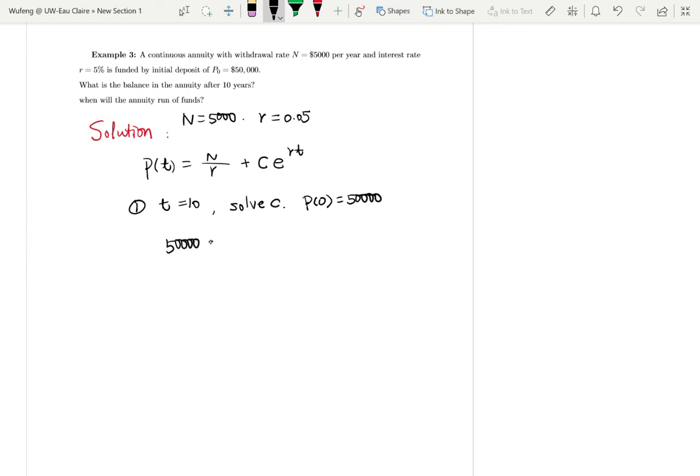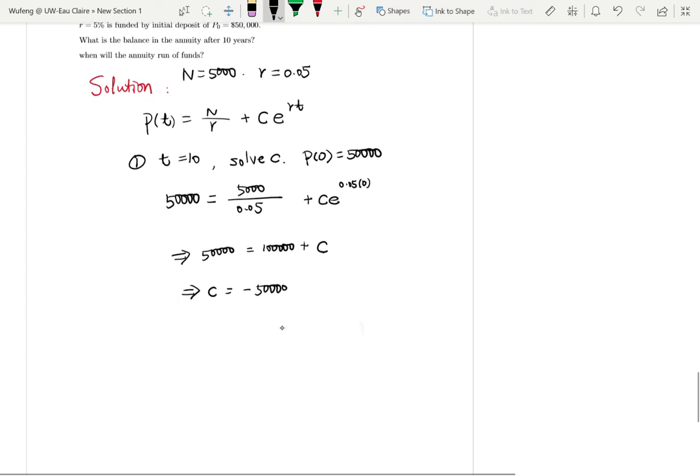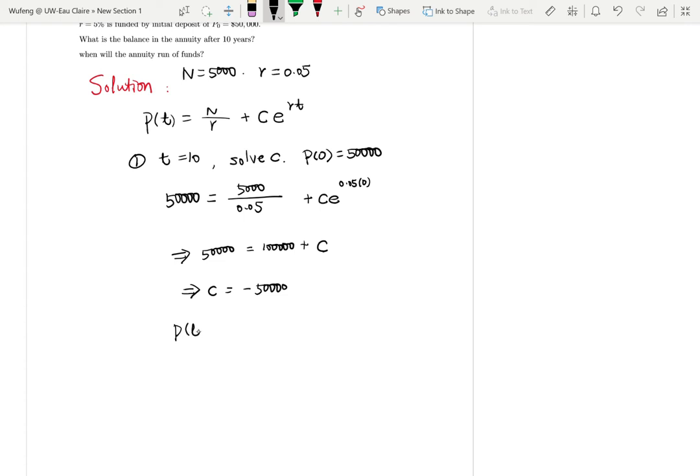Plug in to solve C: 50,000 = 5,000/0.05 + Ce^(0.05×0), which is e^0 = 1. So 50,000 = 100,000 + C. Solving gives C = -50,000. Our model is P(t) = 100,000 - 50,000e^(0.05t).